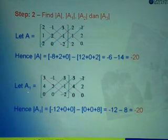So next, to find the determinant of A1, we will copy the original matrix A1. And remember, the first column will be substituted with elements from matrix B, which is 3, 4, 0.